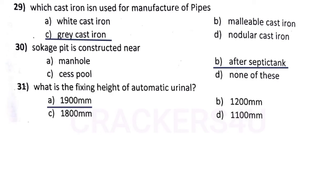Question number twenty-nine: what is the fixing height of automatic urinal — answer option A, 1900 mm.